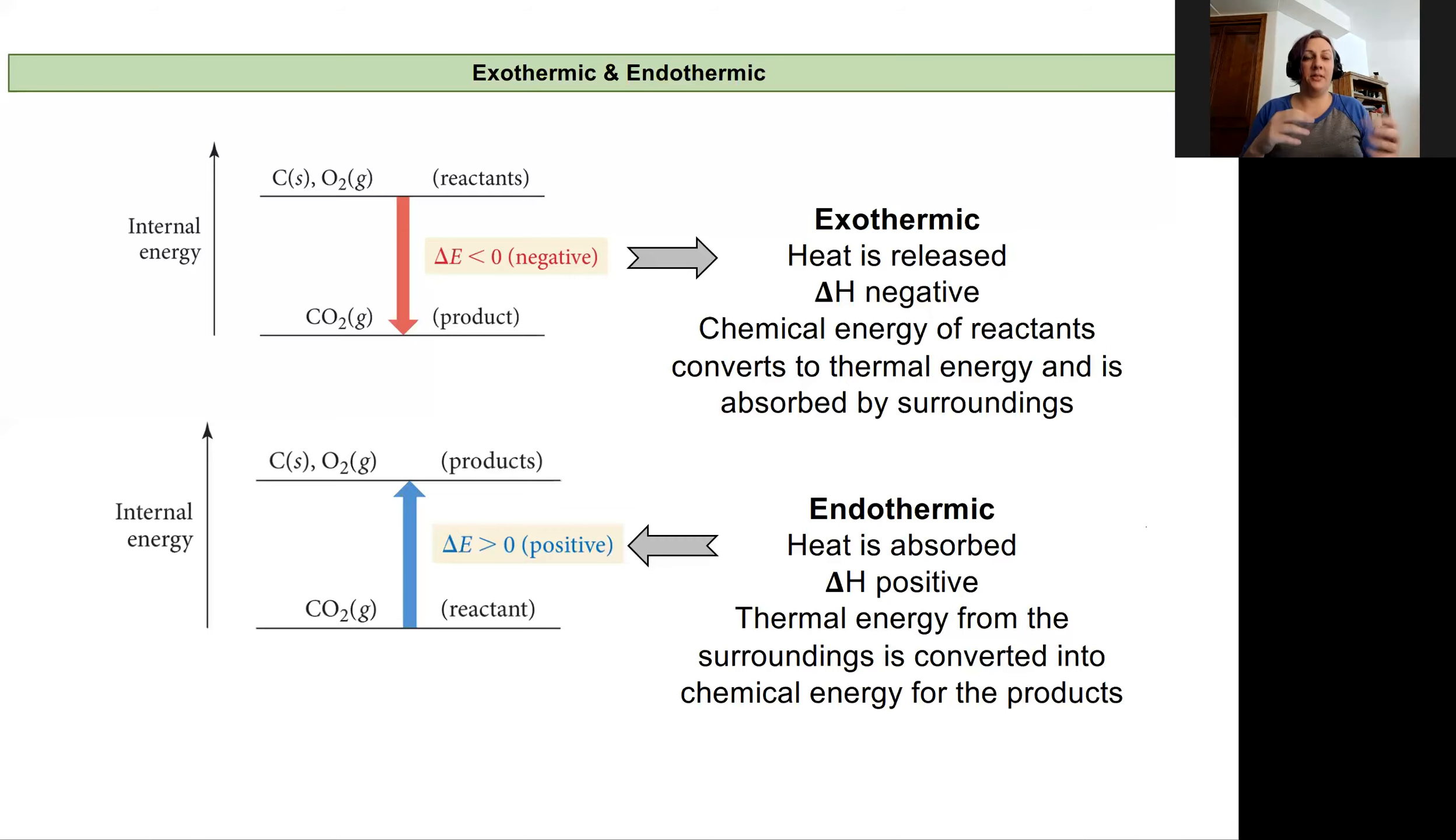Now, the opposite can happen to where we have pretty stable reactants and we form products that are less stable. And because they're less stable, that means we need more energy to be input into the system to be able to create those chemicals. And so in an endothermic reaction, heat needs to be absorbed into the system to be able to form those products. Heat's actually basically a reactant.